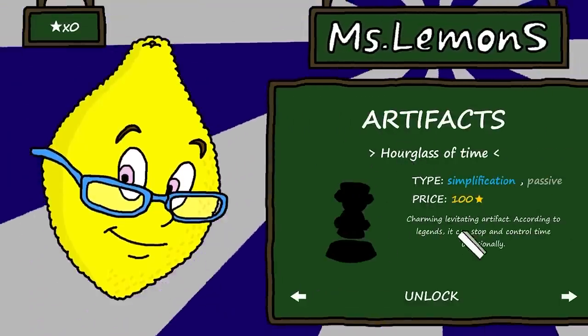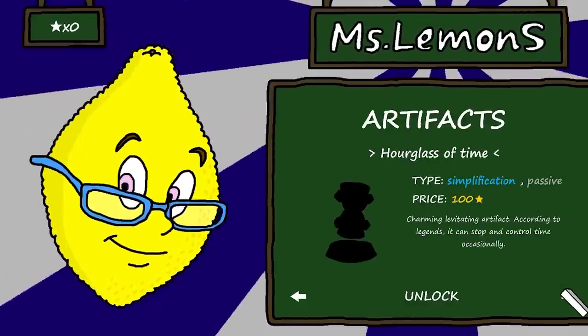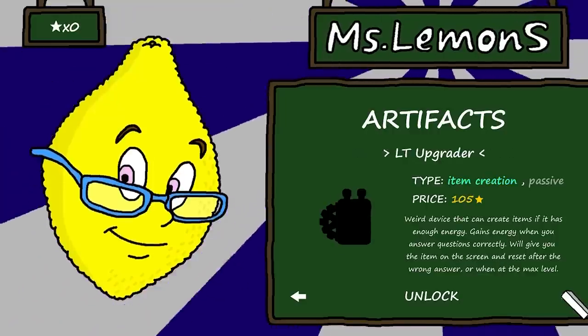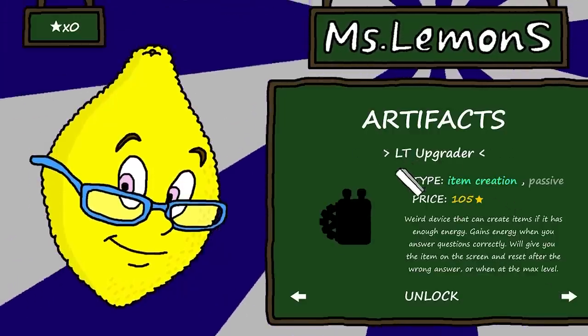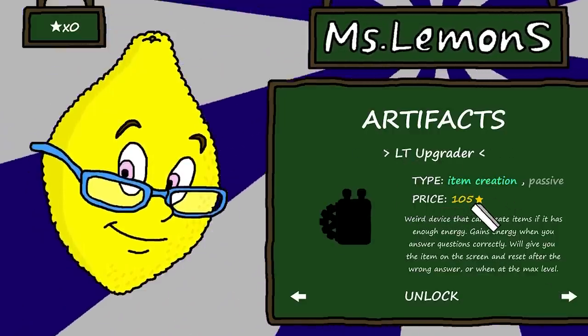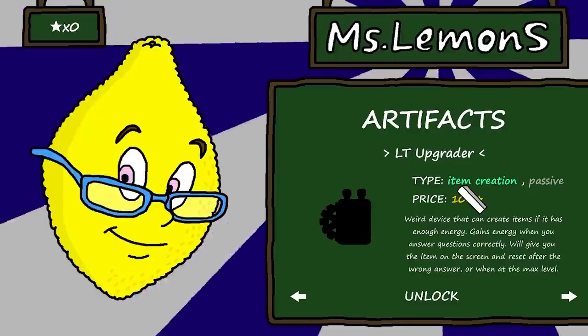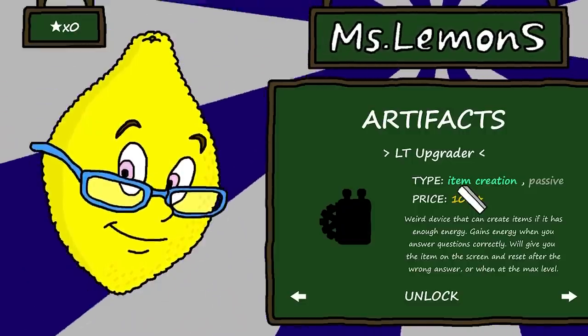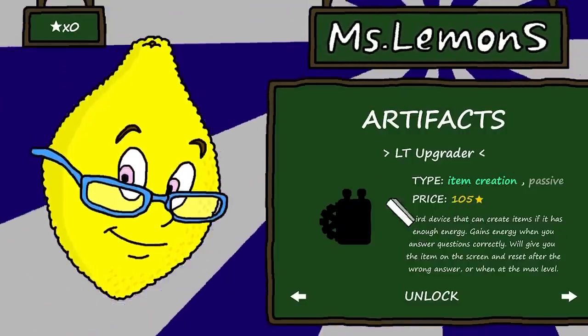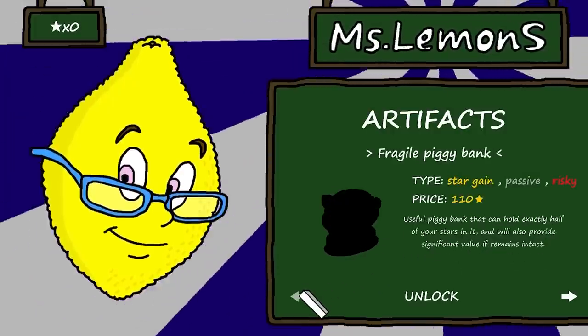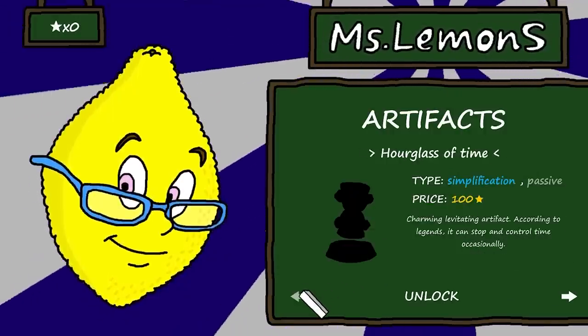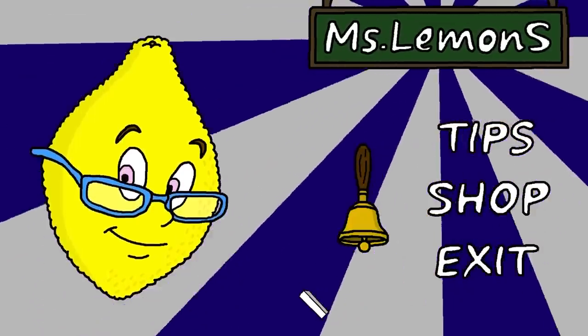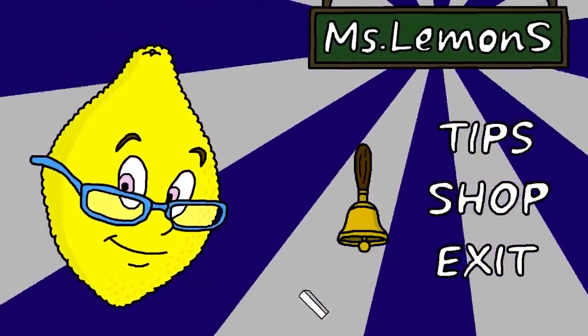Now I also want to look at these artifacts guys. There is one artifact I'm thinking of purchasing if we can get enough stars together and it is this one, the LT Upgrader. We need 105 stars for this but it gives us item creation. So basically this will create items on the fly if we get enough stars. So I'm going to try and go for that in this video, unlock that and then complete the game. So let's do this guys, let's dive in. I'll probably cut out a lot of the boring back and forth to the classes and I'll just focus on the bits where I make progress or something new and exciting happens in the game.